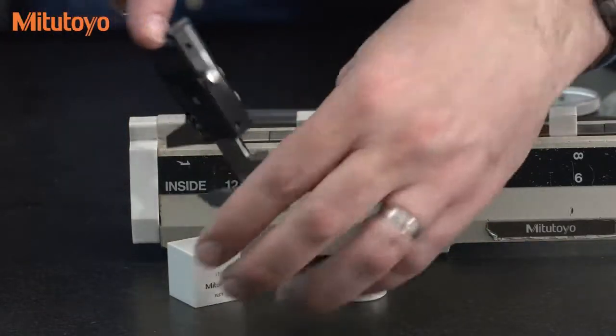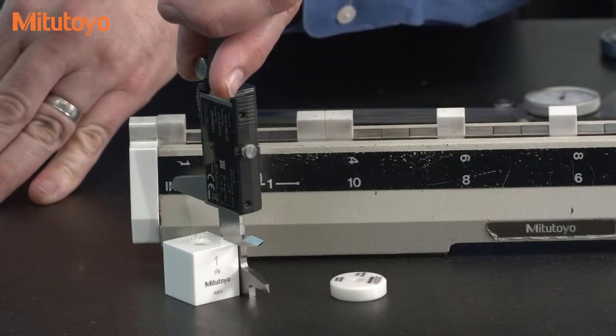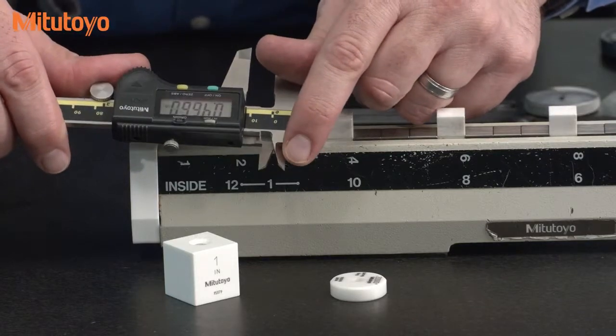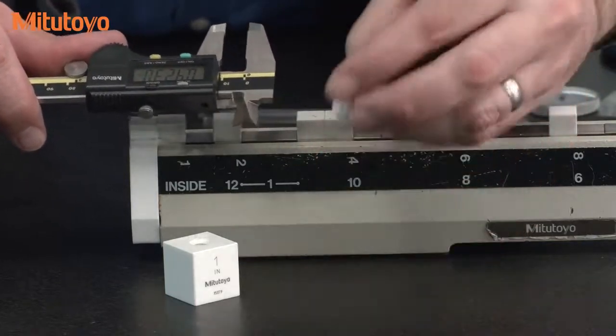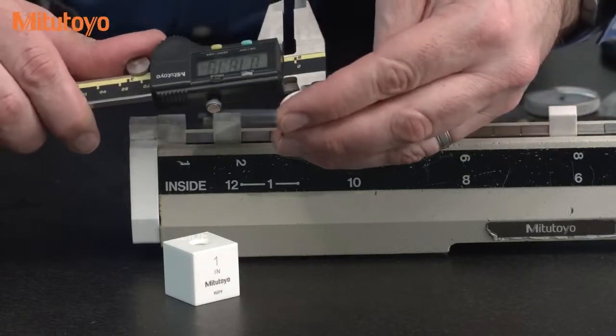This caliper has a step function so we do a measurement like that, and then to make sure that we don't have any problems with the small inside knife edges, we measure a two hundred thousandths ring gauge like that.